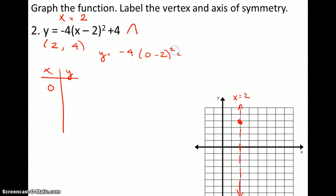And I'm going to have negative 4 times 0 minus 2 squared. The number looks like it's going to be quite large. Negative 4 times negative 2 squared plus 4, which gives me negative 4 times 4. So negative 16 plus 4 is negative 12.